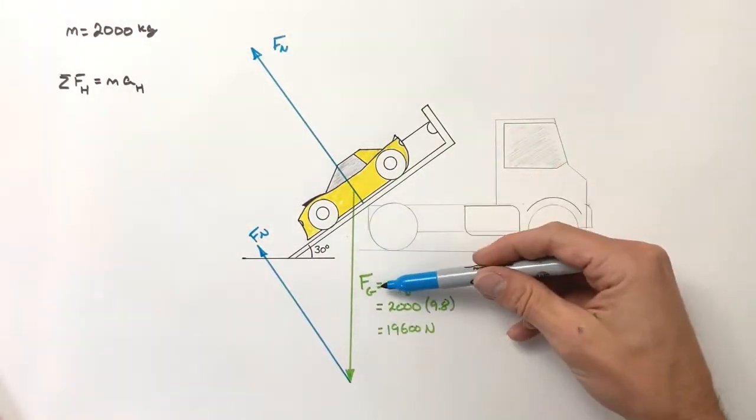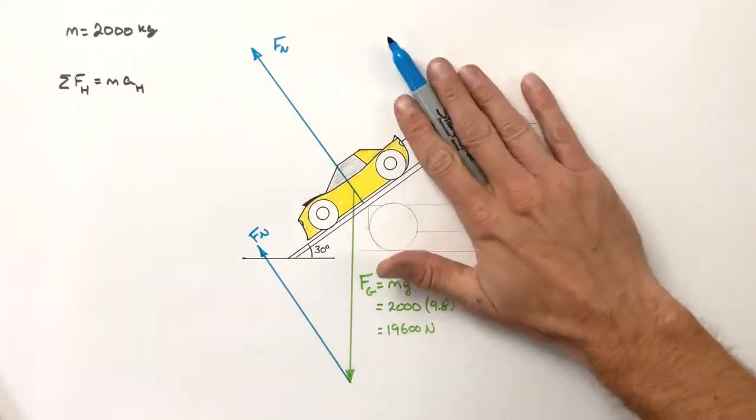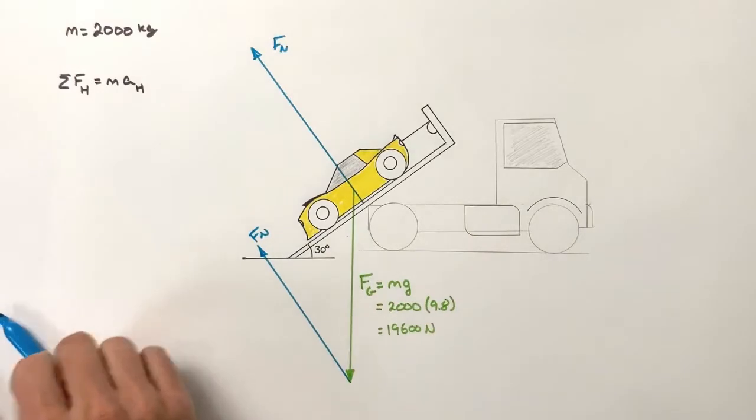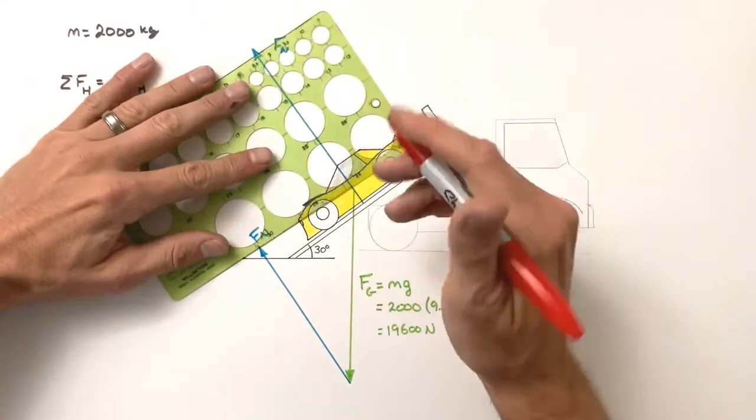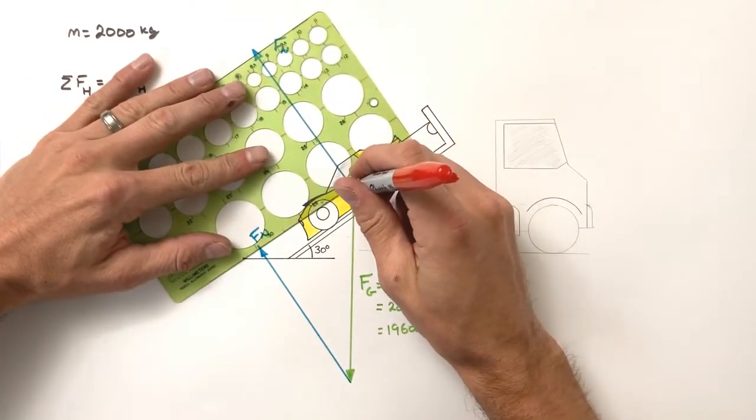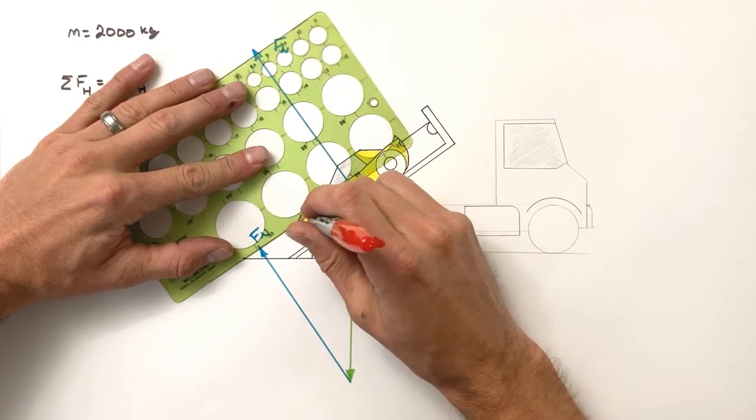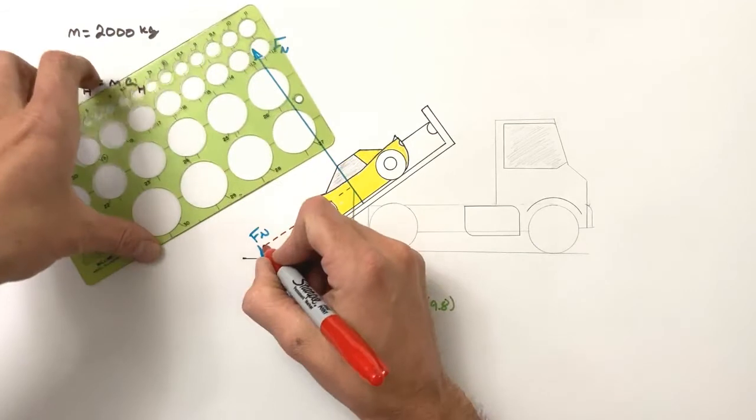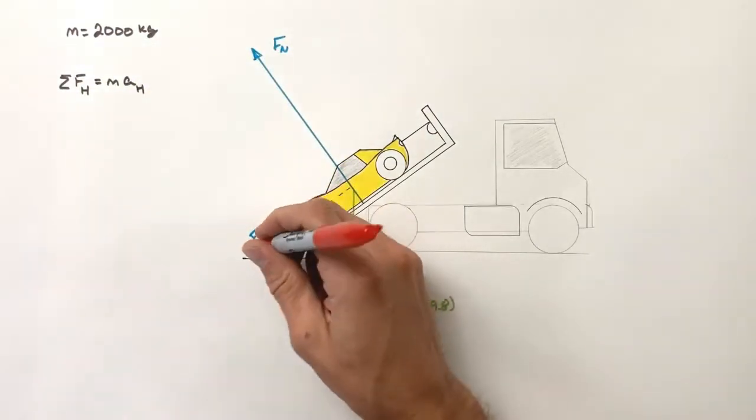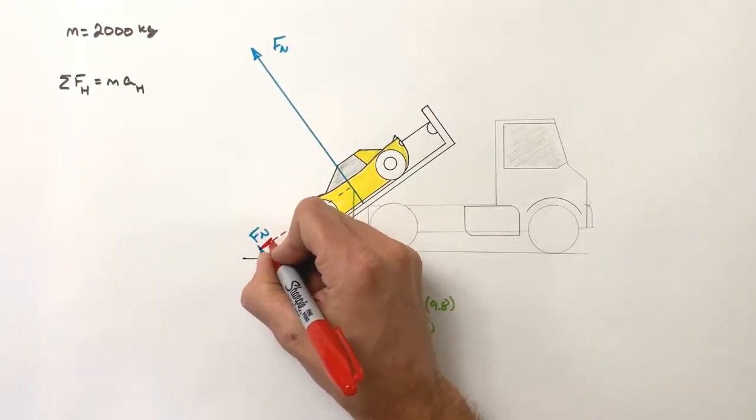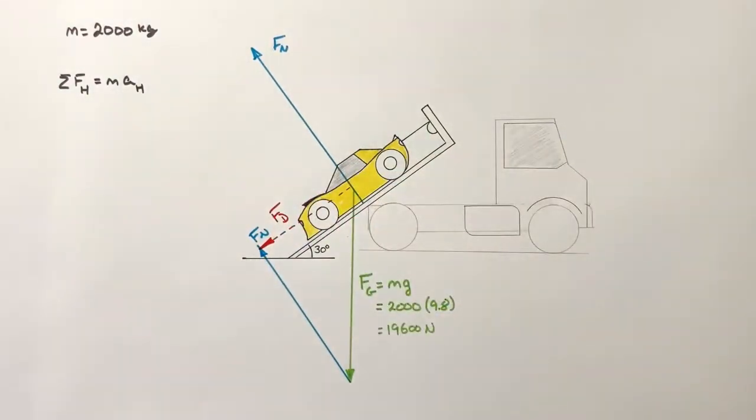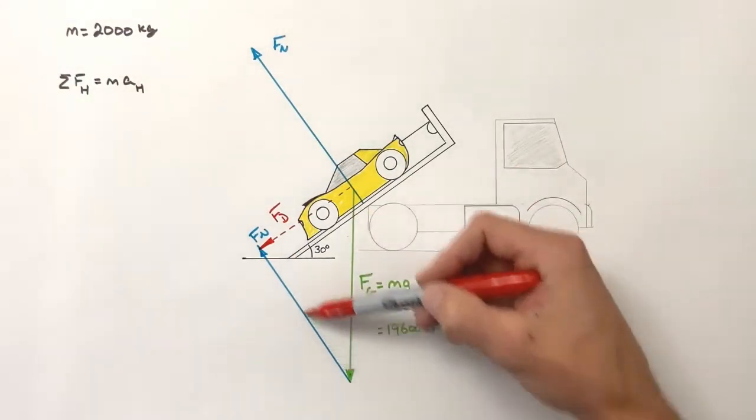We know these two forces, FG and FN, are the two forces acting on the car in the absence of the cable. And so, in the absence of the cable, the car's got to go down the hill. Ultimately, what that means is the resultant force from these two forces, FG and FN, needs to be down the hill. Now, I'm not going to draw this as a solid line because it's not really a force, it's a resultant. This force, which we're going to call FD, is the vector sum of FG and FN.